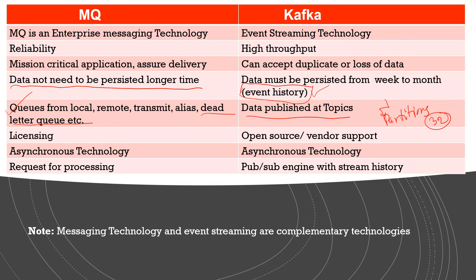Another difference is licensing. With MQ, you need to take a license — it may be subscription-based. But Kafka is open source, and they also provide vendor support if needed in your organization. The good part is that both technologies are asynchronous — whether it's MQ or Kafka, both are asynchronous in nature.